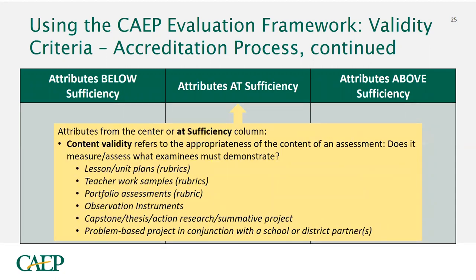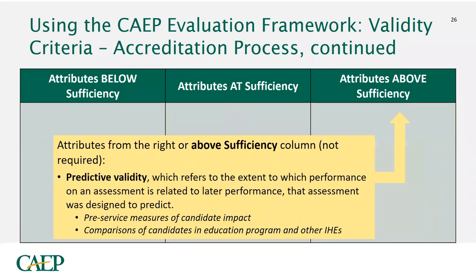In the middle column — those that usually reach sufficiency — most people do content validity to make sure that whatever is in your rubric aligns with what you're assessing. The common instruments that reach sufficiency include lesson plans, unit plans, teacher work samples, portfolio assessments, observation, capstone thesis, or ideally a problem-based project in partnership with a school district.